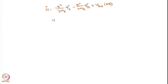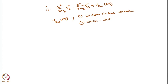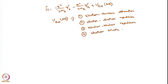U_REL(AB) consists of four terms: electron-nucleus attraction, electron-electron repulsion, nuclear-nuclear repulsion, and electron kinetic energy.